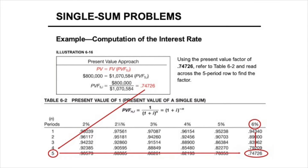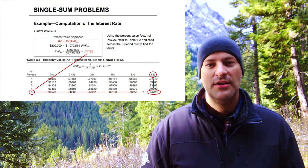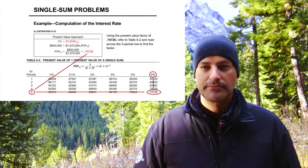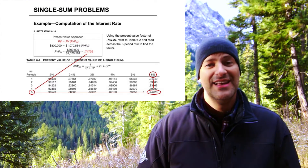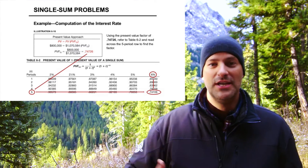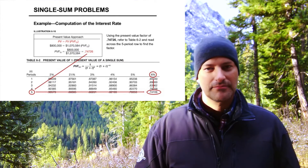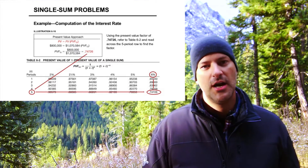That was using the future value table. You can also use the present value table — you just put the present value on top and the future value on the bottom, flipping them. If you calculate something less than one, you need to be in the present value table; if you calculate something greater than one, you need to be in the future value table. You get the same answer regardless of which angle you approach it from.